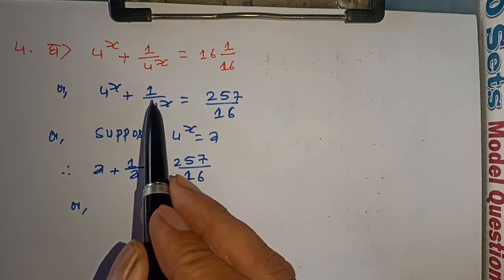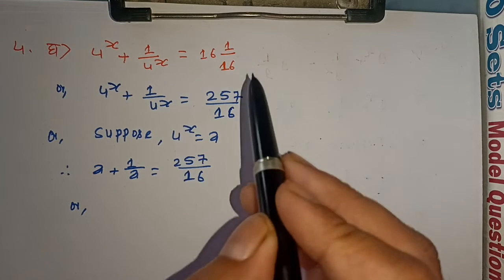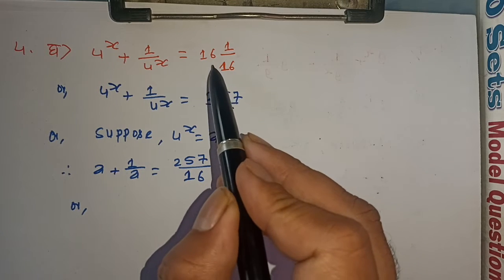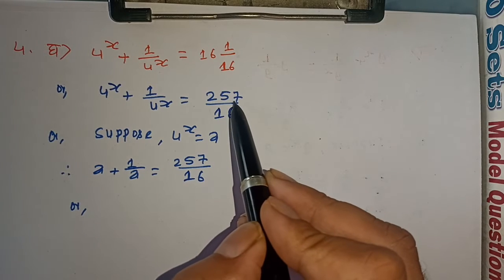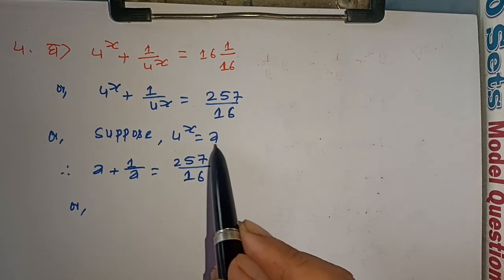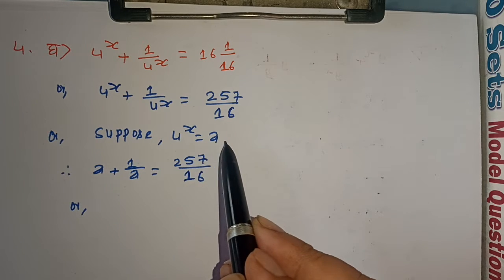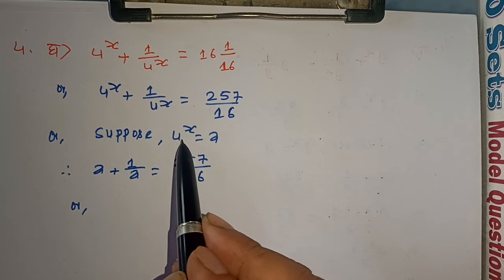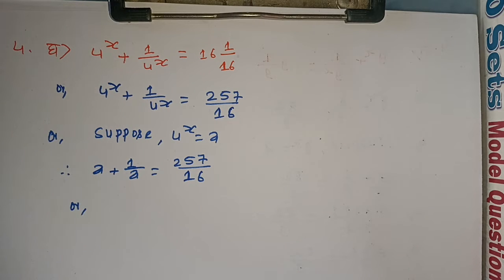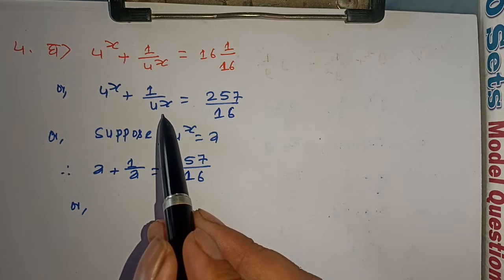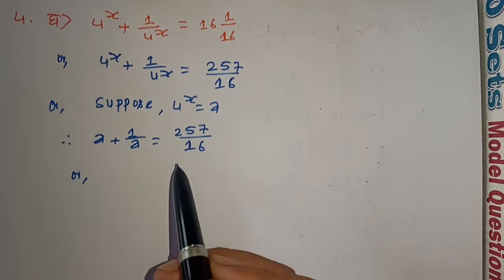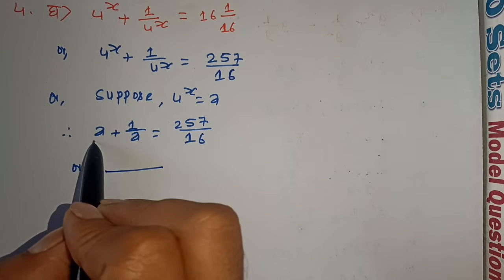4 to the power x plus 1 upon 4 to the power x is called to — suppose 4 to the power x equals a. So a plus 1 upon a equals 257 upon 16. Above, 16 into 16 gives 256, so 256 plus 1 equals 257 upon 16. Substituting, a plus 1 upon a equals 257 upon 16.